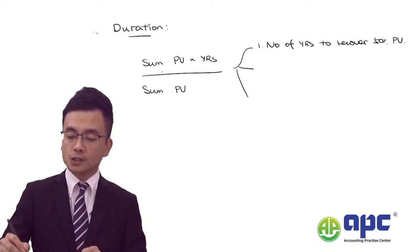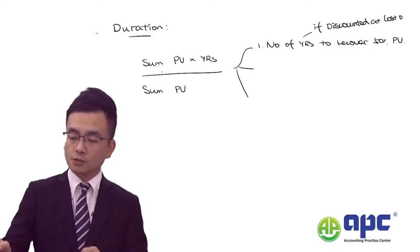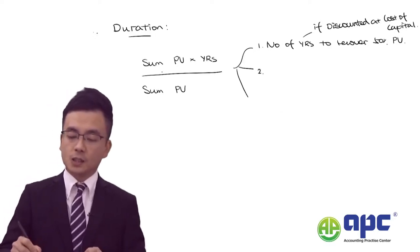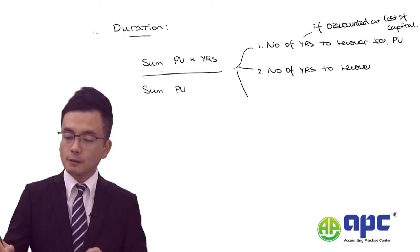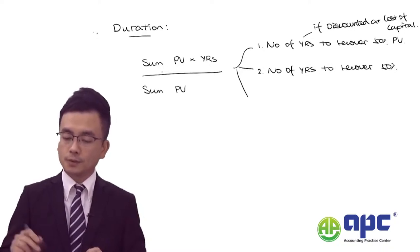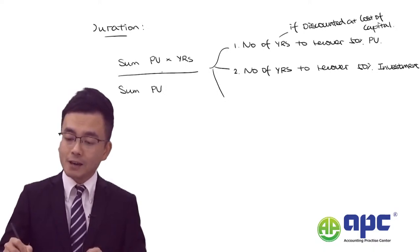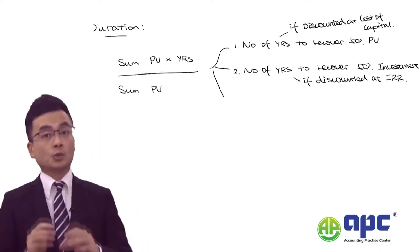The second point is that duration represents the number of years to recover 50% of the initial investment, but only if the cash flows are discounted at the project's internal rate of return — otherwise you would get no marks for that.